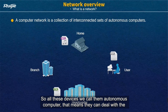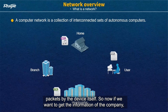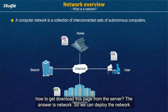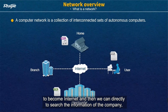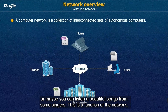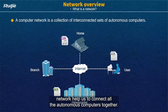Autonomous computers means they can process the packets by the device itself. So now if we want to get the information of a company — how to download that page from the server? The answer is network. We can deploy the network to become the internet, and then we can search the information of the company. Or maybe you can listen to a beautiful song from some singer. So this is a function of the network: it helps us to connect all the autonomous computers together.